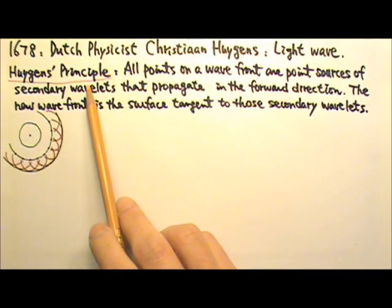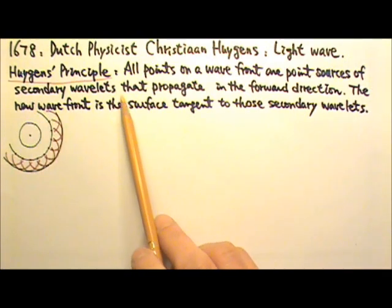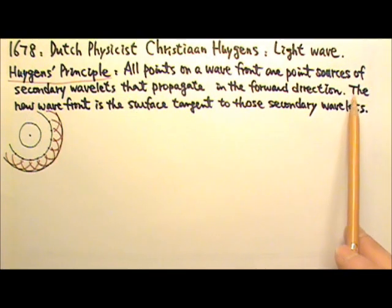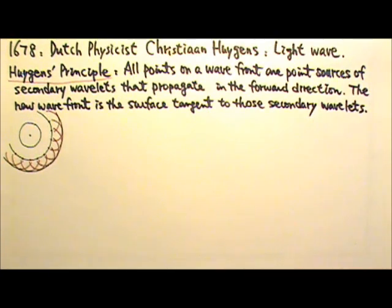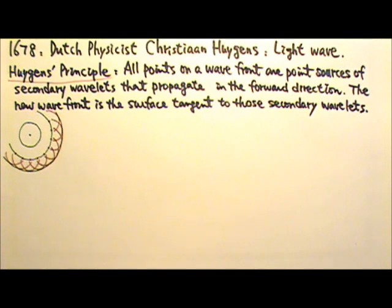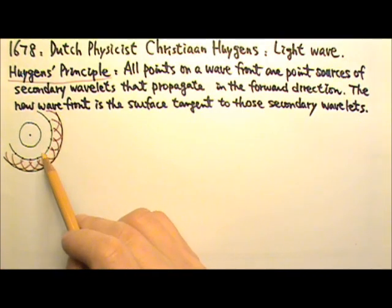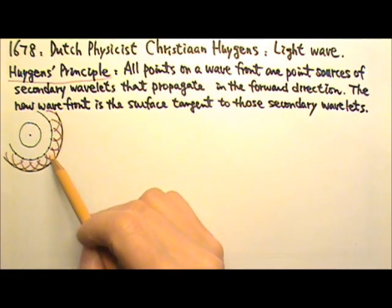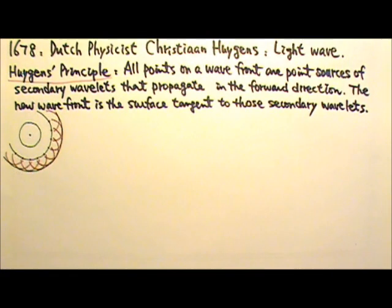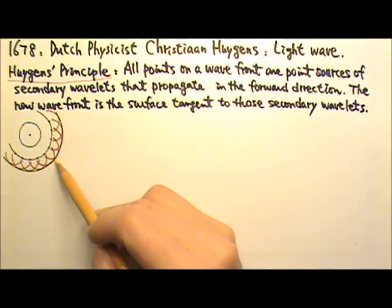Huygens' principle states that all points on a wavefront are point sources of secondary wavelets that propagate in the forward direction. The new wavefront is the surface tangent to those secondary wavelets. For example, for this spherical wave traveling outward, every point on this wavefront is a new wave source producing wavelets traveling outward. It can be proven mathematically that the superposition sum of all these wavelets equals the original wave.